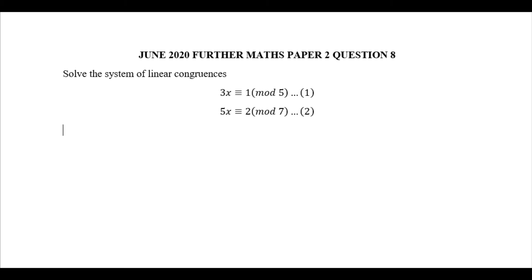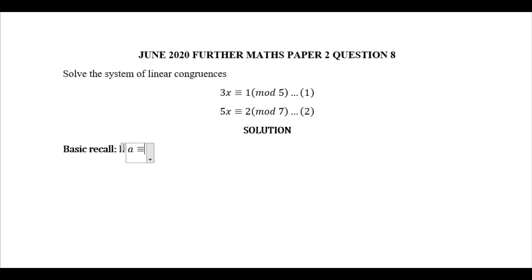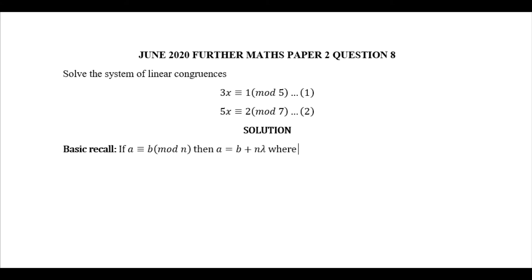There are many ways to solve this problem but I am not going to use the Chinese Remainder Theorem. I am going to use another method which is shorter. The basic recall — the first thing we are going to recall is that if I have a congruent to b mod n, then a will be equal to b plus n times lambda, where lambda is a constant.